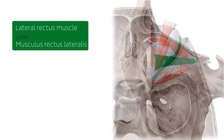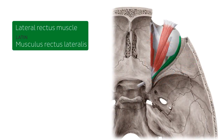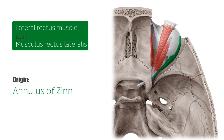The lateral rectus muscle, which is highlighted in green, originates from the common tendinous ring, also known as the annulus of Zinn, located at the apex of the orbit around the optic canal.